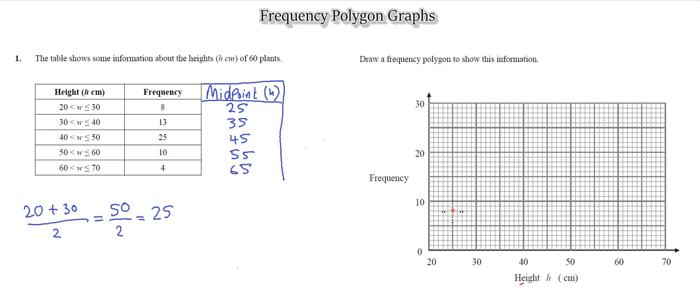Likewise, you do the second one, so that's 35 and 13. So 35 and 13, that's 10, 11, 12, 13. The next one is 45 and 25, so that's 45, go up to 25, that's coming over here. Then 55 and 10, so 55 and 10, that's going to be here. And lastly we have 65 and 4, so 65 and 4.